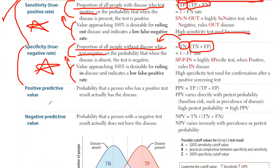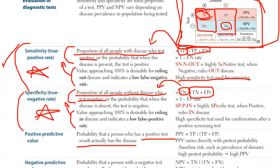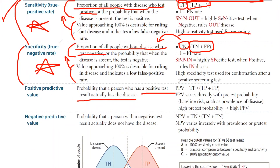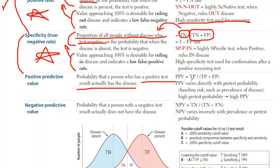Positive and negative predictive value could not be any simpler. Positive predictive value is the probability that a person who has a positive test actually has the disease — true positives over all of those who tested positive. Negative predictive value is the exact opposite: all of those who tested negative, and we're only interested in those who actually do not have the disease. The majority of the problems are with sensitivity and specificity; you shouldn't have trouble with predictive values.